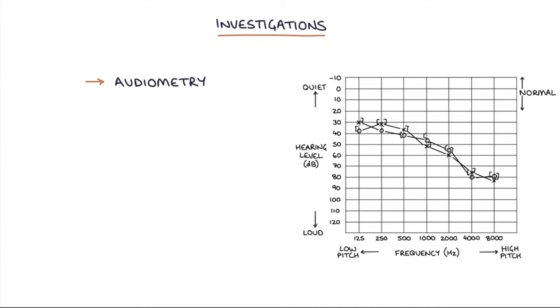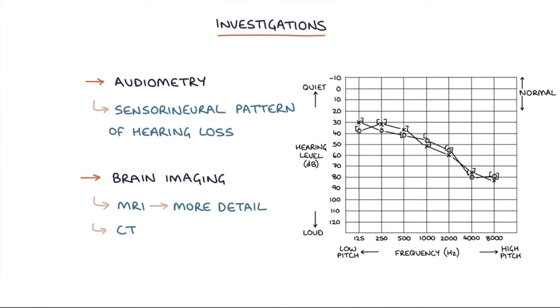Next let's talk about investigations. Audiometry is used to assess hearing loss and this will show a sensorineural pattern of hearing loss. Brain imaging such as an MRI scan or a CT scan can be used to establish a diagnosis and the features of the tumour. MRI scans provide more detail than CT scans.